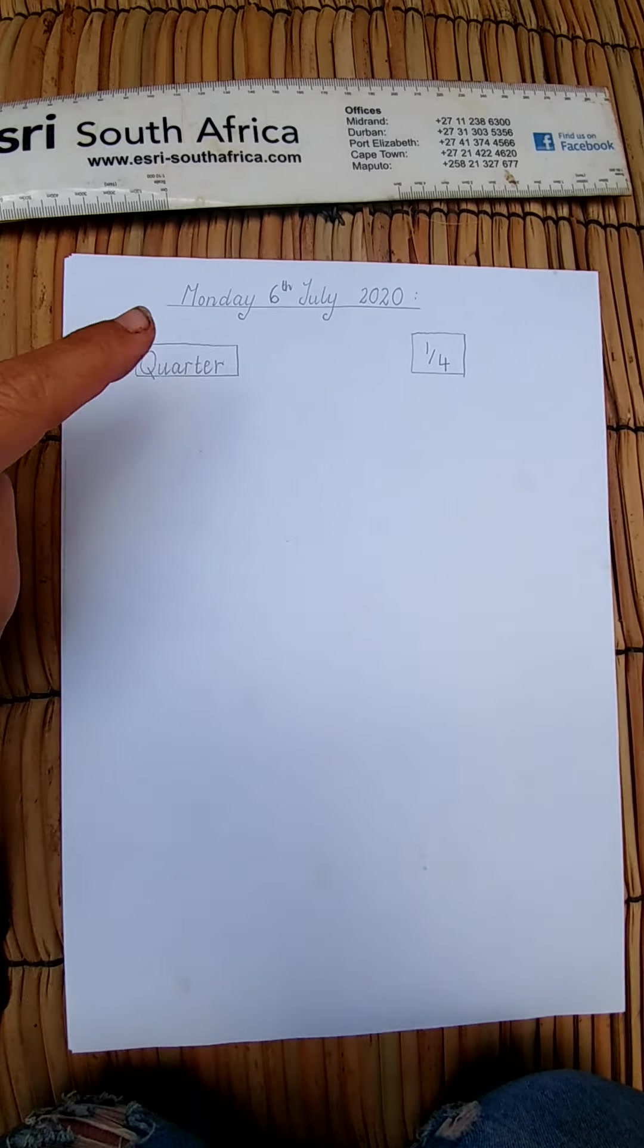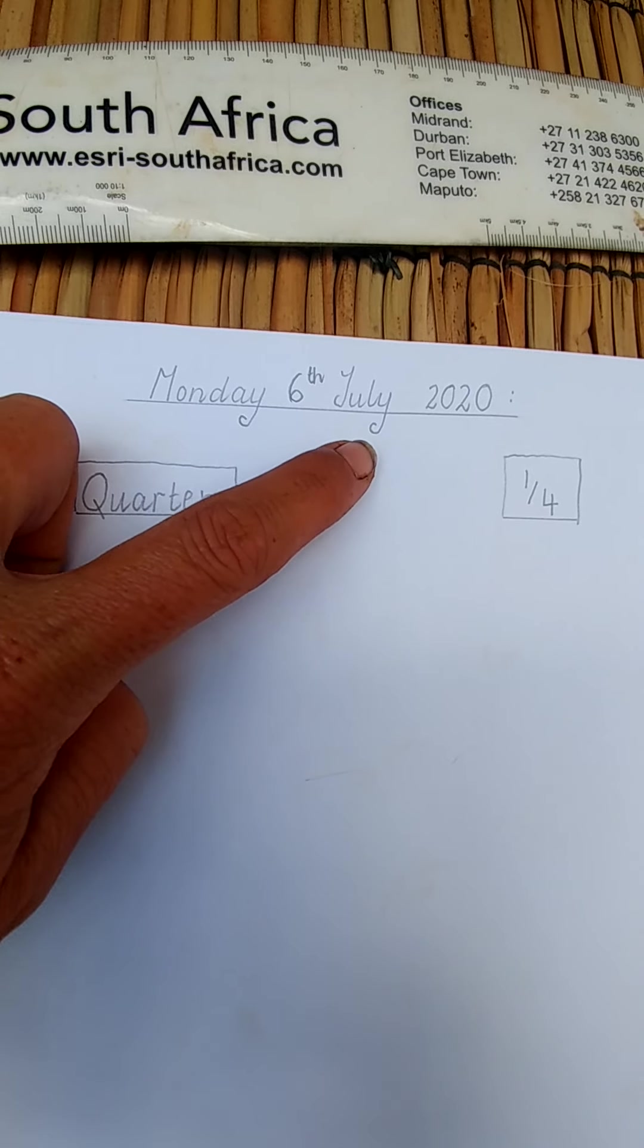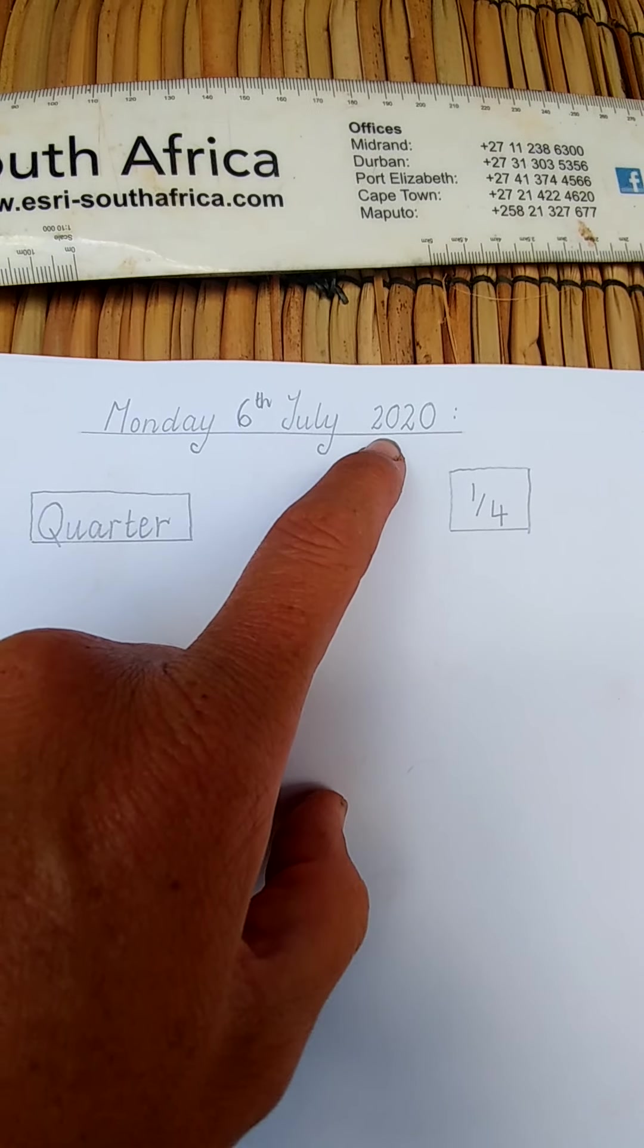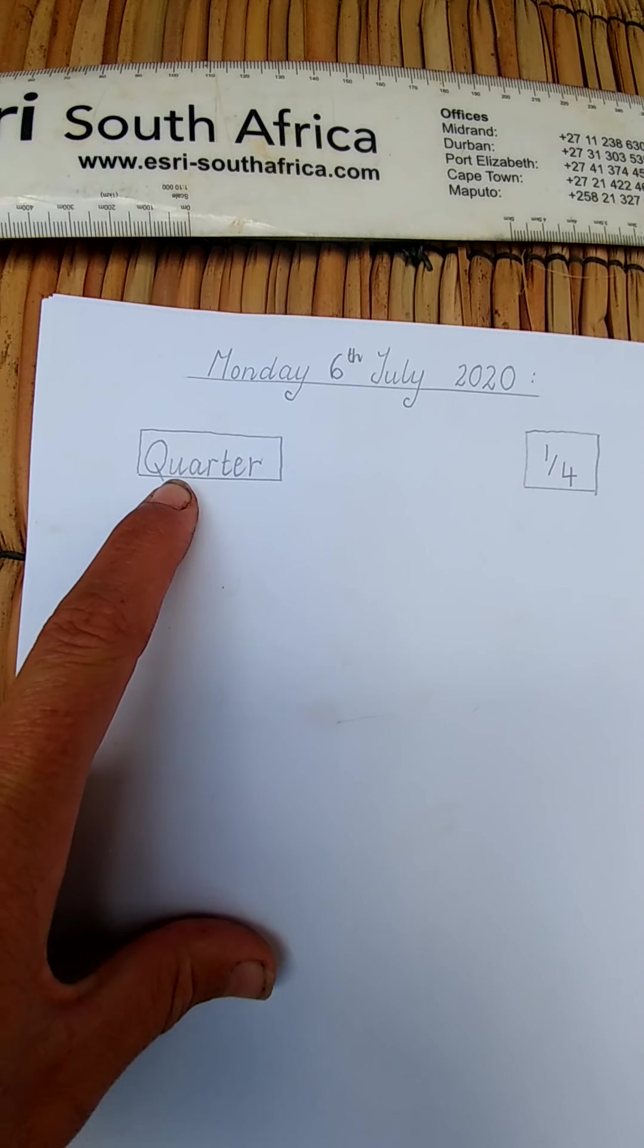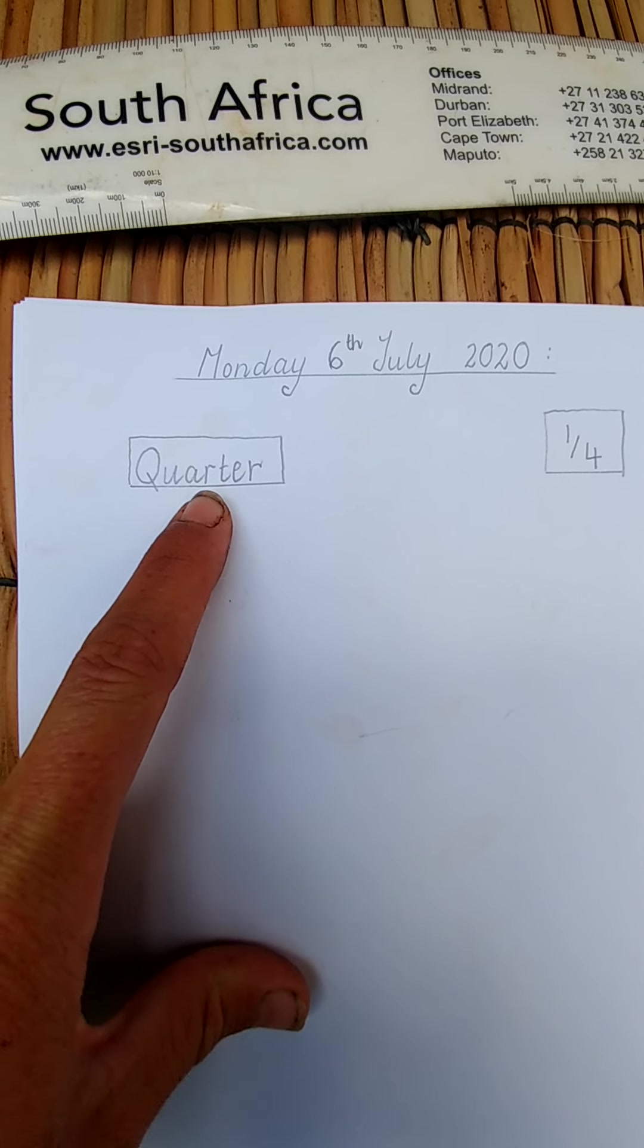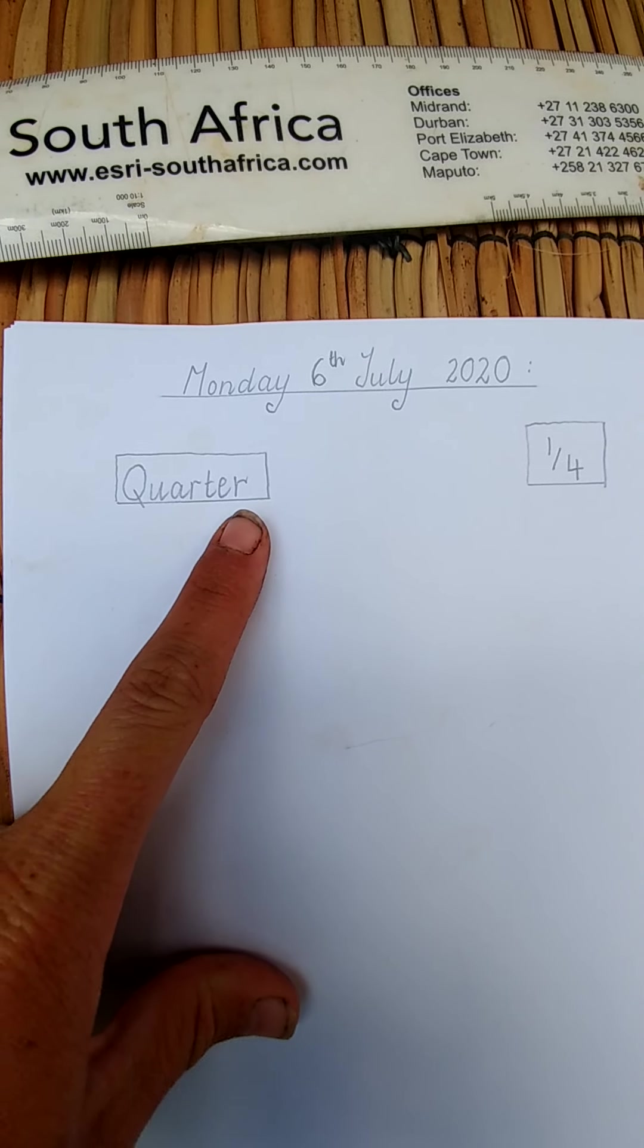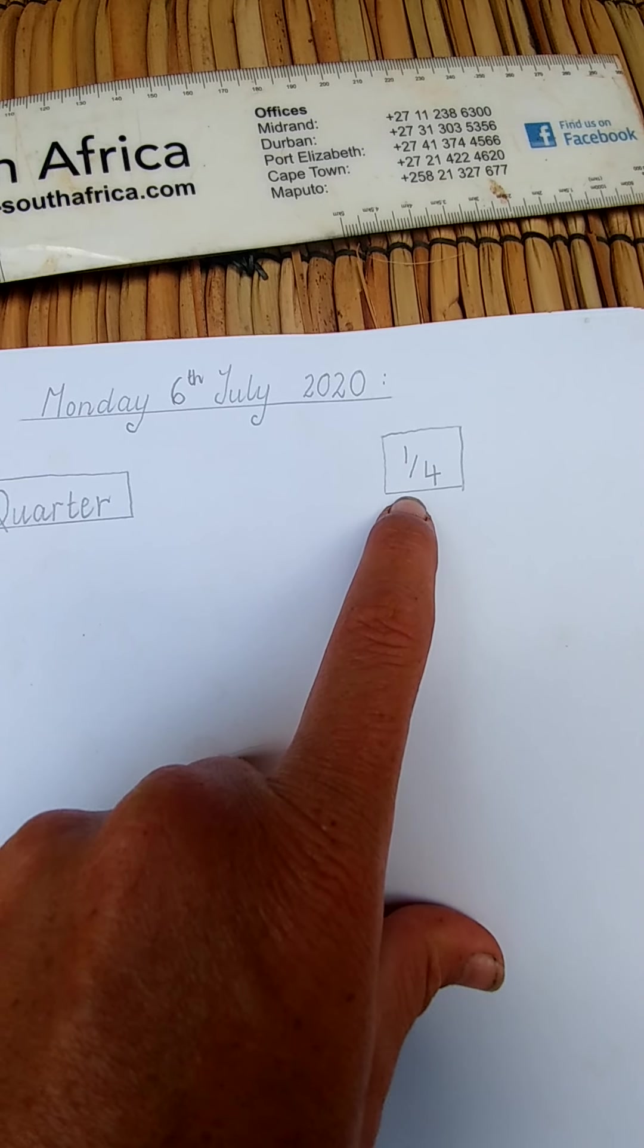In your math book I'd like you to write your date nice and neatly: Monday 6th July 2020. This week we're going to start looking at a quarter. We spell quarter Q-U-A-R-T-E-R and it looks like this: 1 over 4.